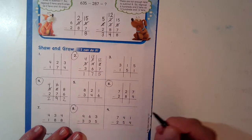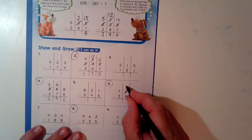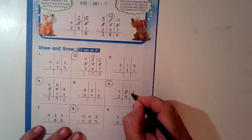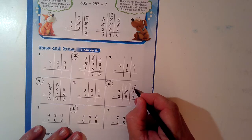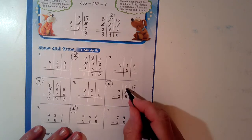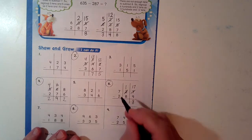7 minus 9, can't do it. Take this. Take 1 away from the 2, it's now a 1. Add that 10 to the 7, it's a 17. 17 minus 9 is 8. If I have 1, can I take away 8? Cannot.